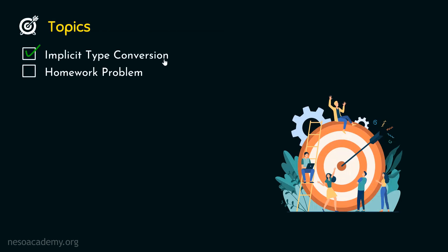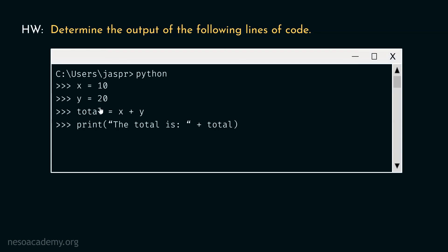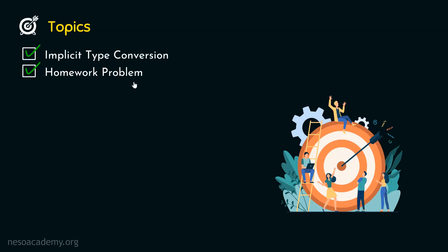We are done with implicit type conversion. Now let's see the homework problem: determine the output of the following lines of code and post your answers in the comment section. Thank you for watching this presentation — I will see you in the next one.